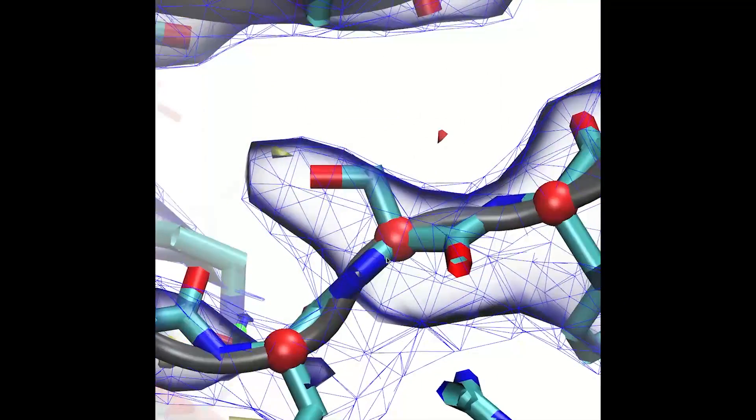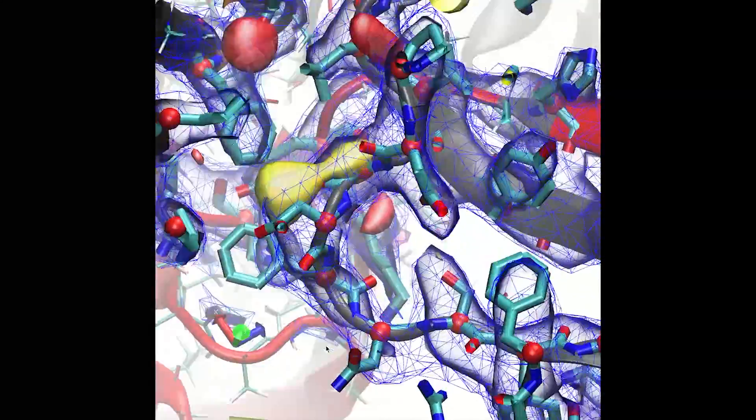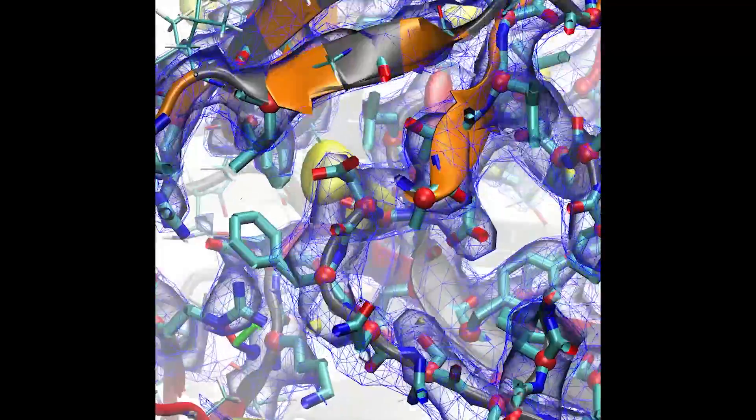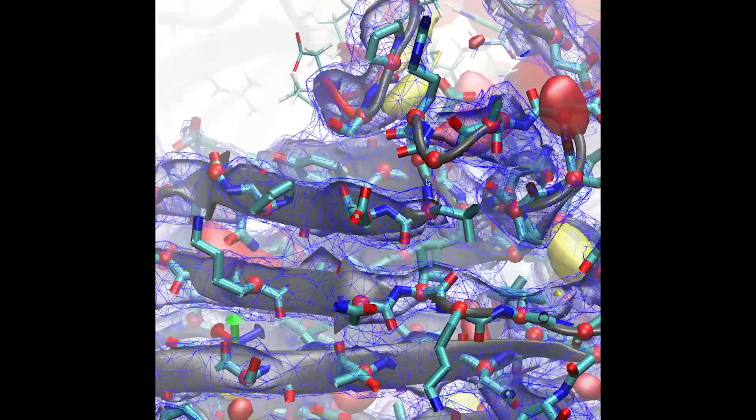Signs of error include underfilled density around the serine residue, a phenylalanine outside of density, two acids in somewhat hydrophobic environments, and signs of overpacking at the end terminus of the next beta strand back.